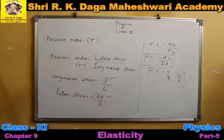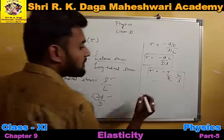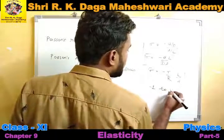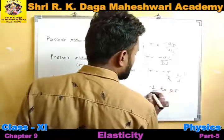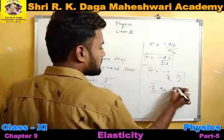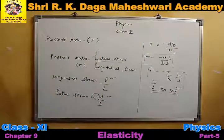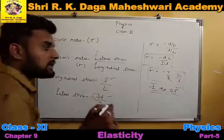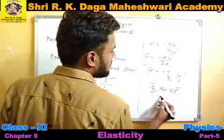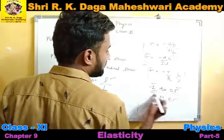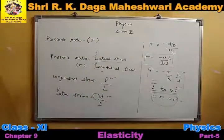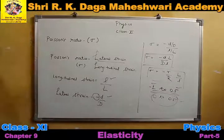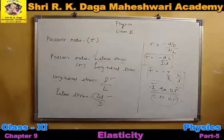Theoretically, Poisson's ratio ranges from minus 1 to 0.5. But practically, if we talk about it, the Poisson's ratio is equal to 0 to 0.5. So this one is the theoretical value and this one is the practical value of the Poisson's ratio.